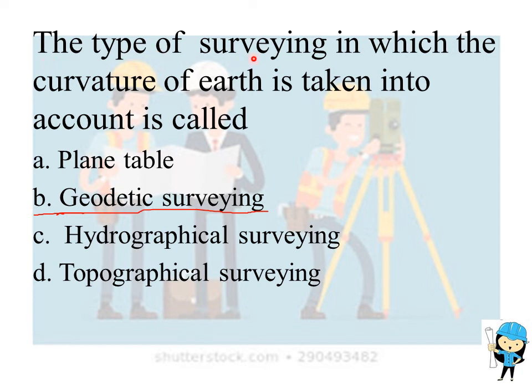The type of surveying in which the curvature of earth is taken into account is called geodetic surveying. Hydrographical surveying deals with water bodies. Topographical surveying includes both artificial and man-made features.